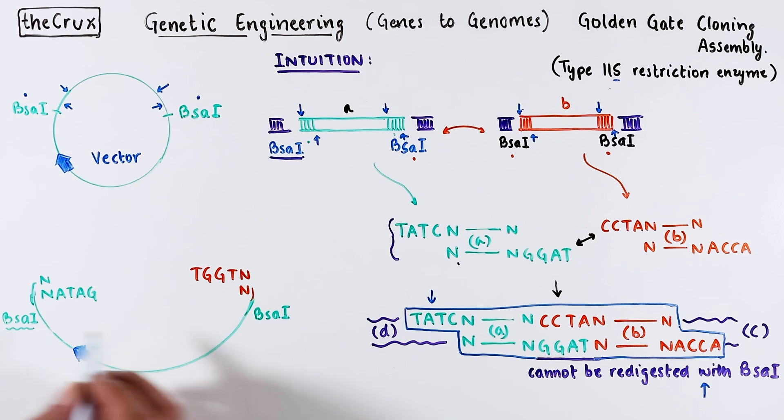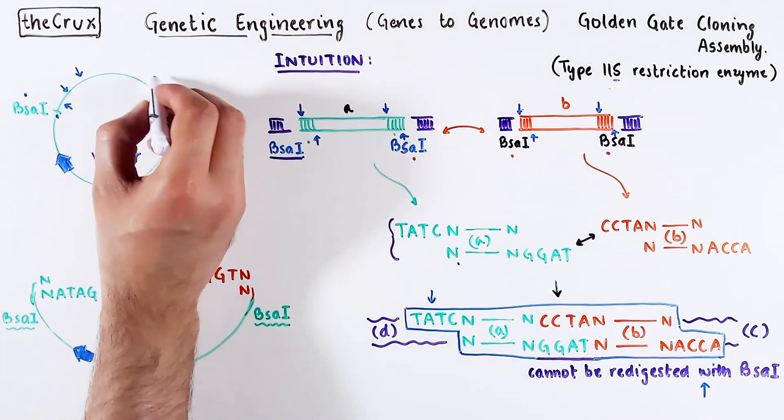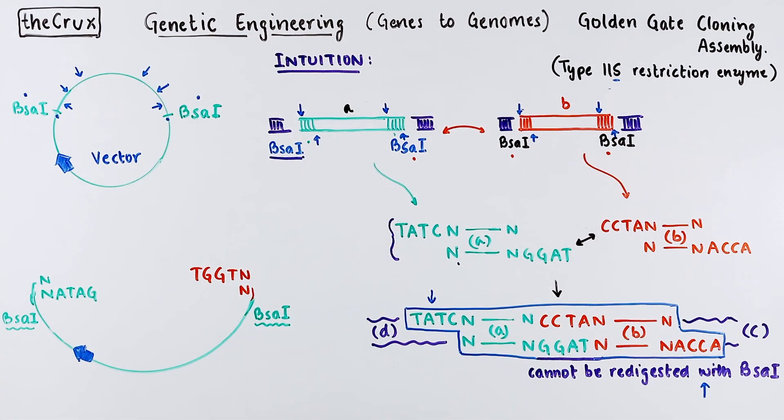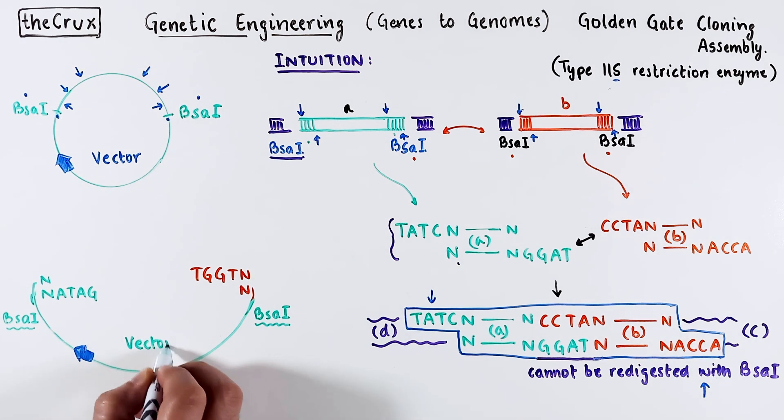Important point to note is that in this scenario, the recognition site is towards the backbone side, so the recognition is not lost. In contrast, if you had the recognition sequence on the other side, the BSA1 recognition will be lost from the backbone.